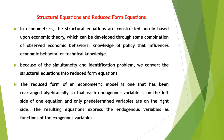The reduced form equation of an econometric model is one that has been rearranged algebraically so that each endogenous variable appears on the left side of one equation and only predetermined variables appear on the right side. The resulting equation represents the endogenous variable as a function of the exogenous variables. There is no consensus among economists about whether to use structural or reduced form equations, because the structural model assumes detailed information whereas the reduced form assumes less detailed or incomplete information. Therefore, the use of reduced form equations is applied only after considering the purpose of the research.